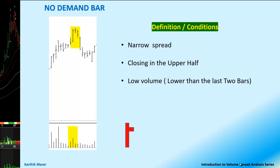By definition, it is a narrow spread bar. It is closing on the upper half — either at the 50% or above the 50% of the bar length — and the volume will be low. In technical terms, it will be lower than the volume of the previous two bars.